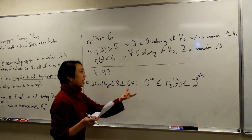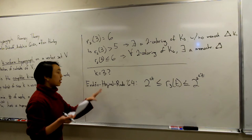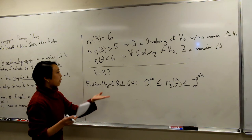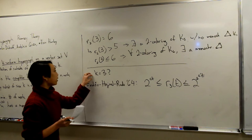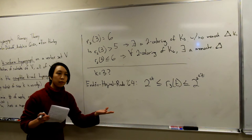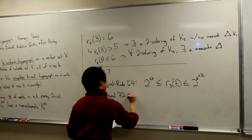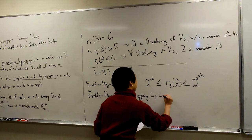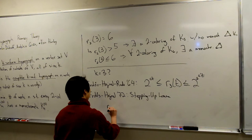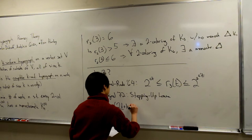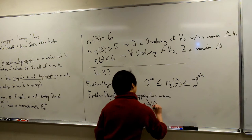Proving the case K=3 could have implications for higher uniformity Ramsey numbers because of the stepping up lemma. Erdős and Hajnal in 1972 have a stepping up lemma: you can find lower bounds for the K+1 uniform Ramsey number using the K-uniform Ramsey number. You take a good coloring — one with no monochromatic cliques — for K-uniform, and step it up to a coloring of a K+1 uniform hypergraph.